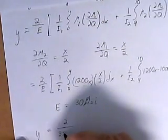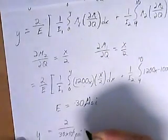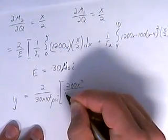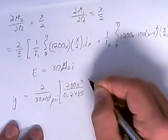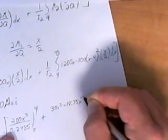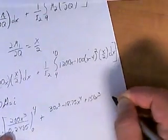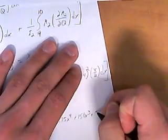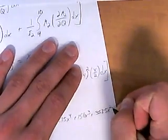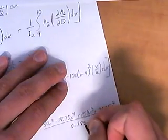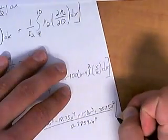After the integration, we have y is equal to 2 over 30 times 10^6 psi times 200x cubed all over 0.2485 evaluated from 0 to 4. And then we've got 300x cubed minus 18.75x to the 4th plus 150x to the 3rd plus 150x to the 4th plus 357.5x squared all over 0.7854 inches to the 4th. Integrated from 4 to 10.